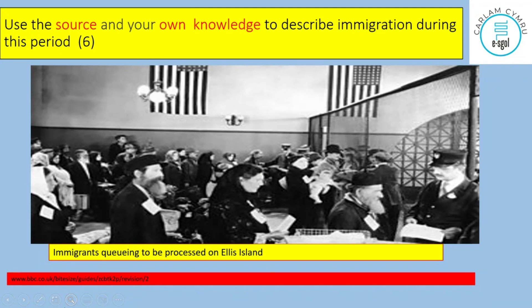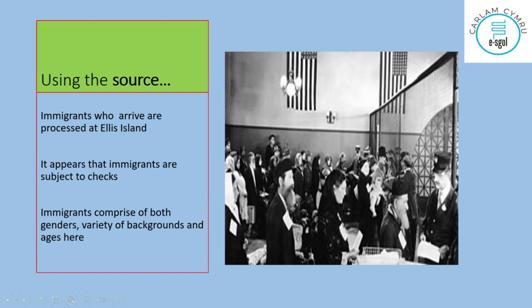Now let's look at one or two more source-and-knowledge examples. In this case I've picked a source showing immigrants arriving at the United States, being processed at Ellis Island near New York City. Looking at the source again, we can see people queuing in an orderly fashion, people of different nationalities, backgrounds, and genders, and a system in place for them to be processed. There's a variety of backgrounds, ages, and subjects to checks, which gives us a few comments about the content.